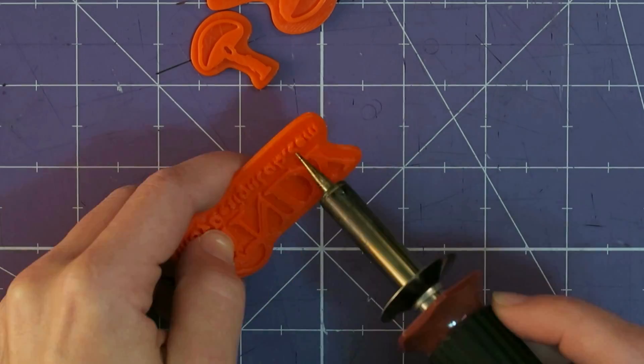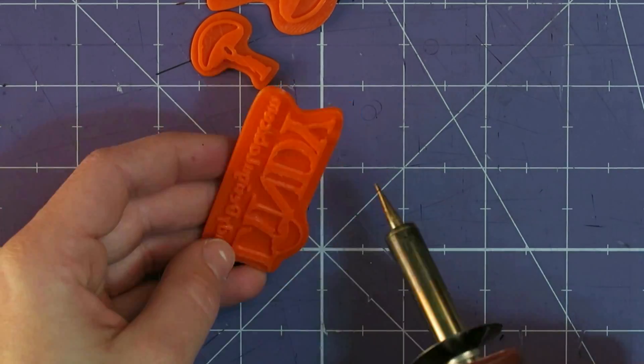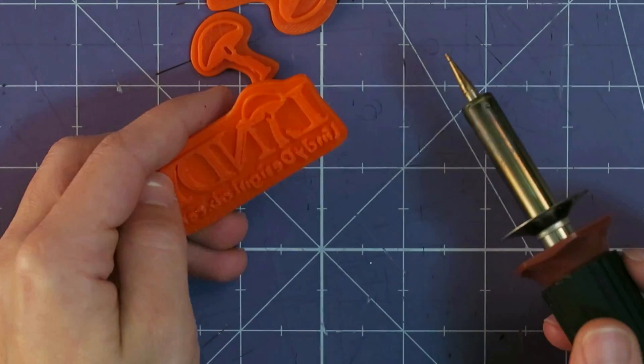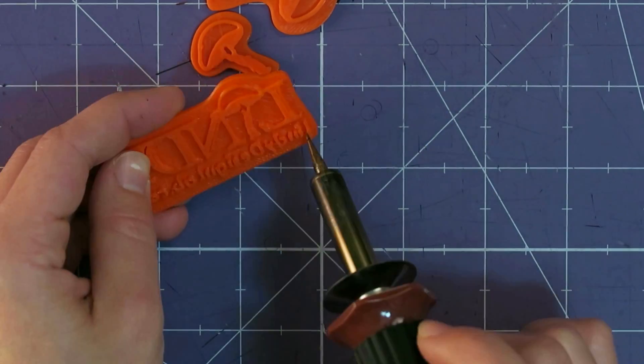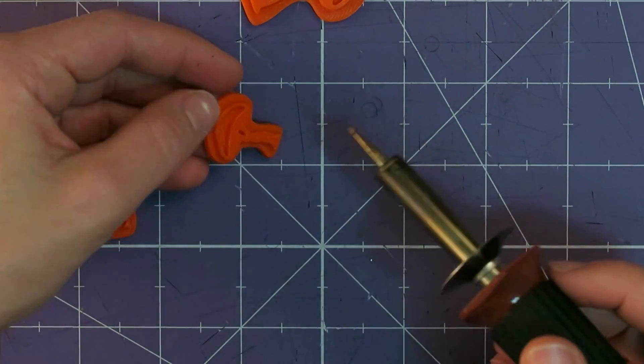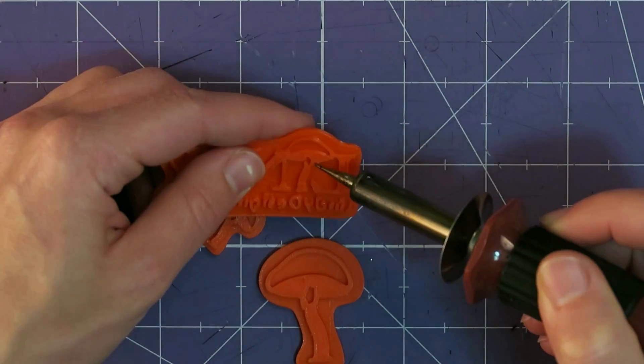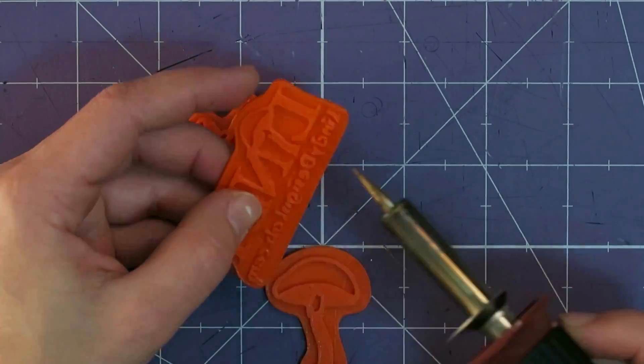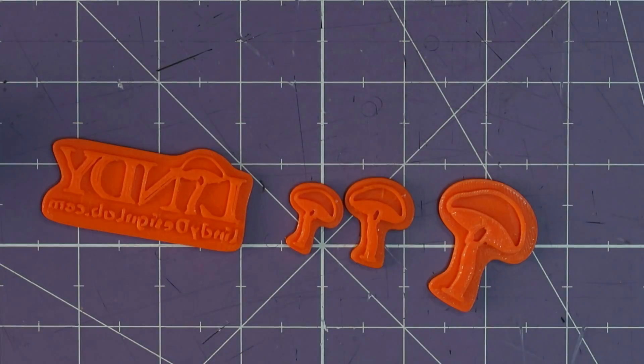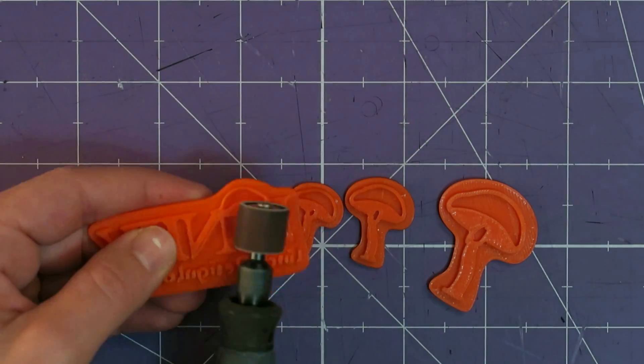So my favorite tool for cleaning up that kind of thing is just a wood burner. I like this nice pointy tip. It's great for detail work. Just put it on a fairly low heat so you don't accidentally melt through something you didn't mean to. And that works pretty well. You don't have to worry too much on a stamp about the lower portion. It's really just the top layer that's going to be laying down the ink or paint or whatever you're using.